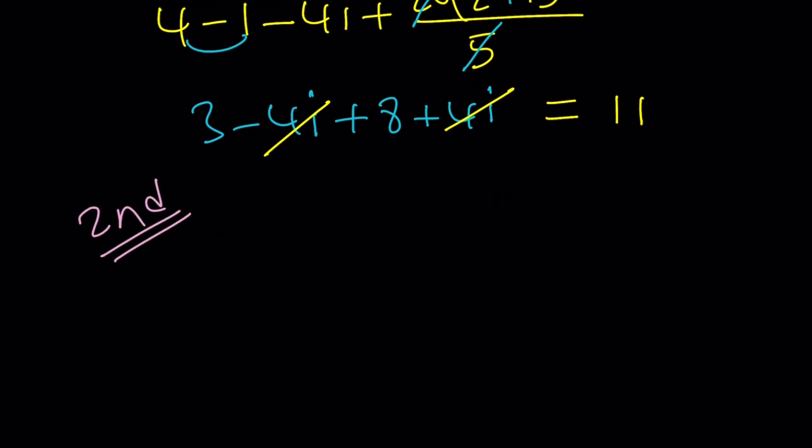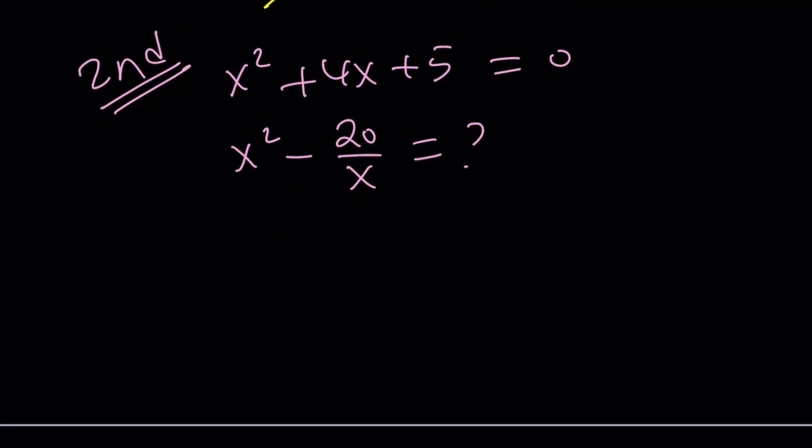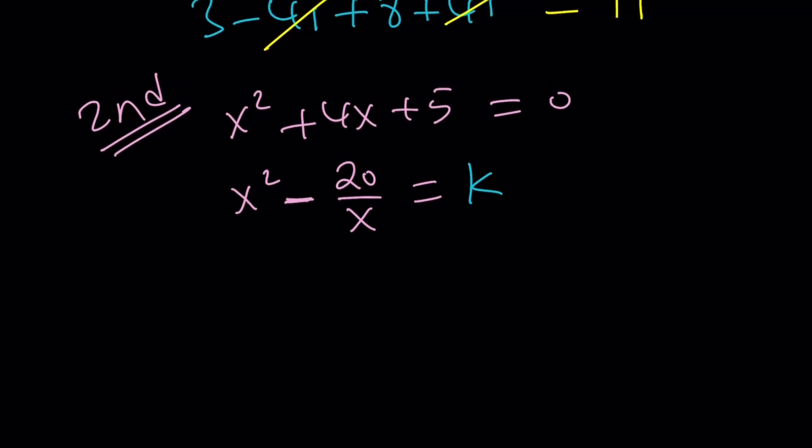The second method will probably branch off into A and B. We are given a quadratic, and for these x values, we're supposed to evaluate this expression. Since this is equal to a constant, let's set it equal to k. k is a constant, real constant. I'm going to multiply both sides by x. That gives me x cubed minus 20 equals kx.